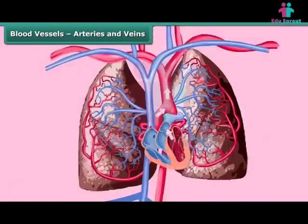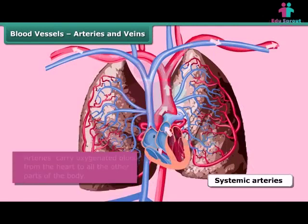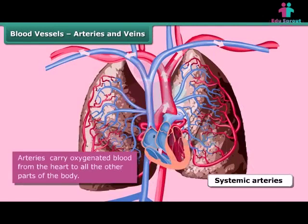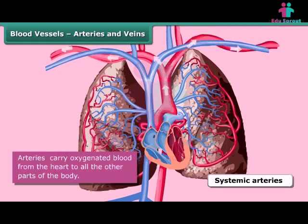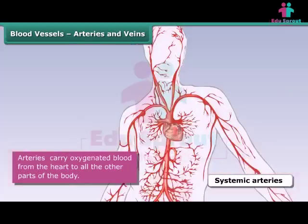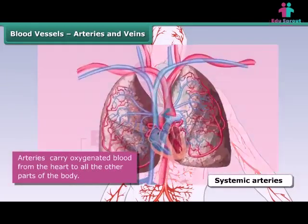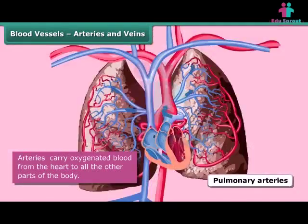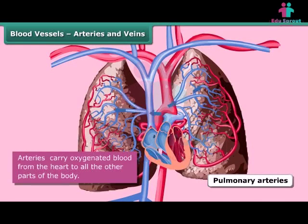Arteries are of two types. Systemic arteries carry oxygenated blood from the heart to the other parts of the body. Pulmonary arteries carry deoxygenated blood from the heart to the lungs.